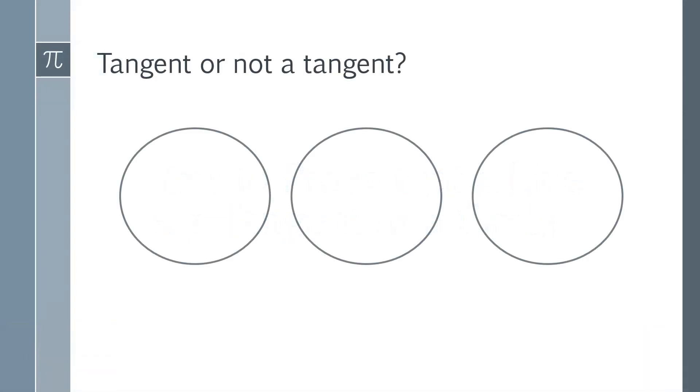Fundamentally, you have three possibilities. If you were to draw a line at random, one of three possible things could happen. You could have this case here where you have two points of intersection, and therefore that is not a tangent.